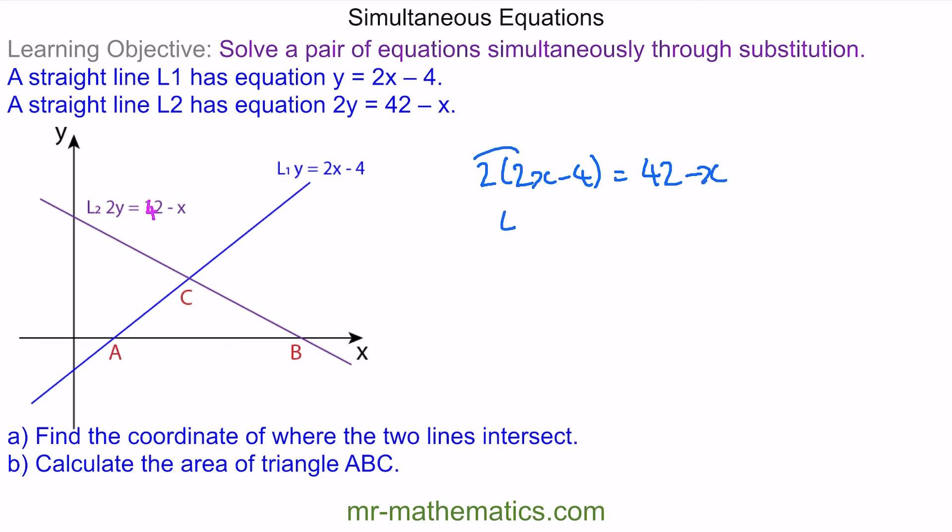So we have 4x minus 8 equals 42 minus x. We'll move this negative x to the other side by adding x to both sides. So 5x minus 8 equals 42.